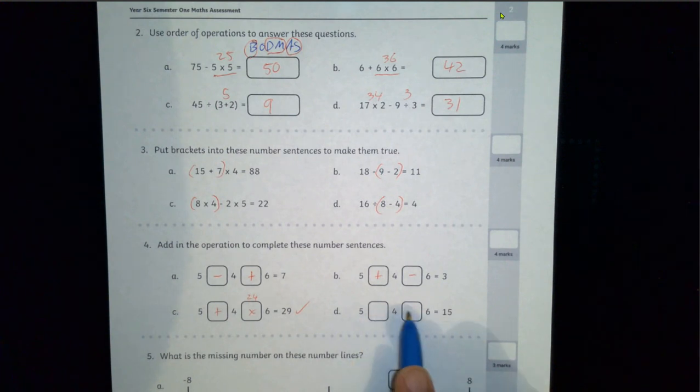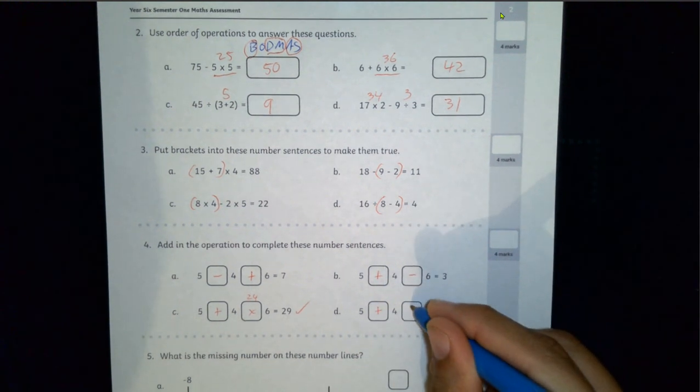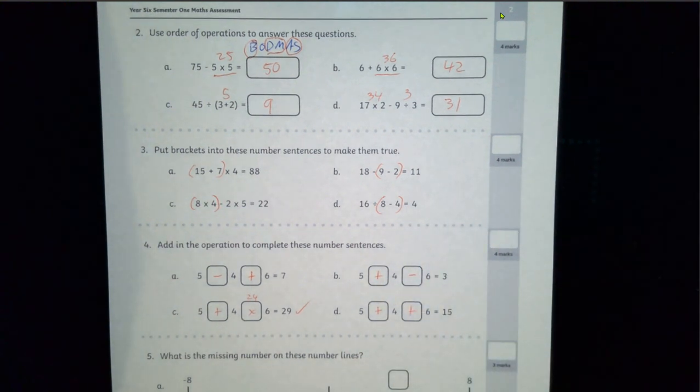5 plus 4 plus 6. Yeah, that's as easy as it needs to be. 5 plus 4 is 9, plus 6 is 15. Easy enough.